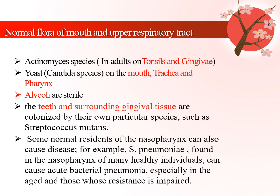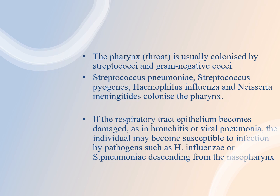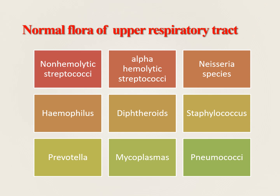The teeth and surrounding gingival tissues are colonized by their own particular species such as Streptococcus mutans. Some normal residents of the nasopharynx can also cause disease; for example, Streptococcus pneumoniae found in the nasopharynx of many healthy individuals can cause acute bacterial pneumonia, especially in the aged and those whose resistance is impaired. The pharynx is colonized by Streptococcus pneumoniae, Streptococcus pyogenes, and gram-negative cocci including Haemophilus influenzae and Neisseria meningitidis. If the respiratory tract epithelium becomes damaged as in bronchitis or viral pneumonia, individuals may become susceptible to infection by these pathogens descending from the nasopharynx. The usual normal flora of the upper respiratory tract includes non-haemolytic Streptococci, alpha-haemolytic Streptococci, Neisseria species, Haemophilus influenzae, diphtheroids, Staphylococcus species, Prevotella, Mycoplasmas, and Pneumococci.